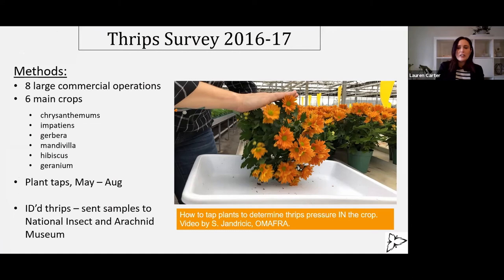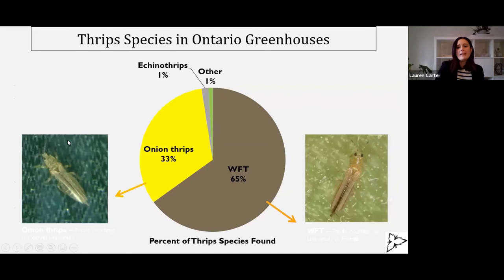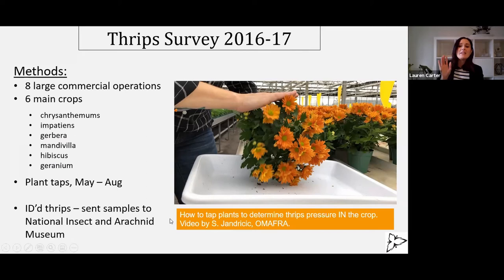Here's how you tap a plant to get thrips off of it so you can look at the different life stages and catch them if you ever need to ID them — you just bop the plant on the head gently so you don't knock off flowers, into a white pan. Then we collected the thrips and ID'd them. We also sent them to Ottawa to confirm our IDs because even though I'm an entomologist, I'm not really a systematicist, which is next-level entomology.